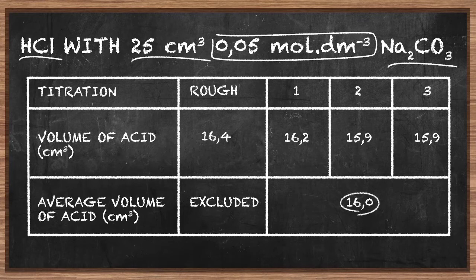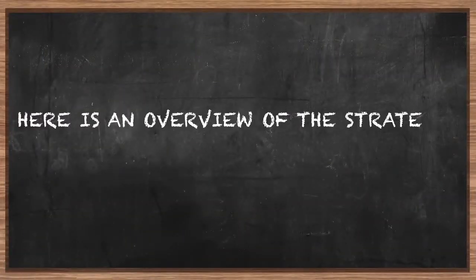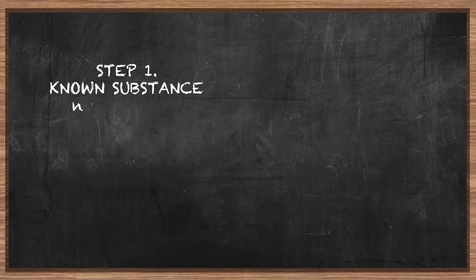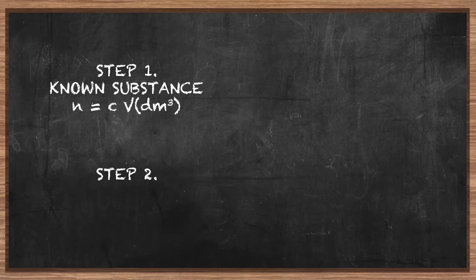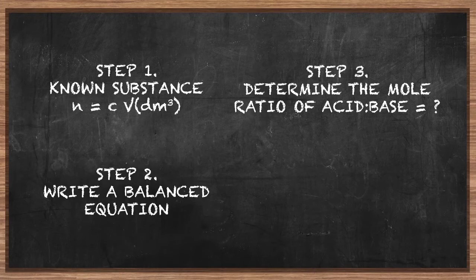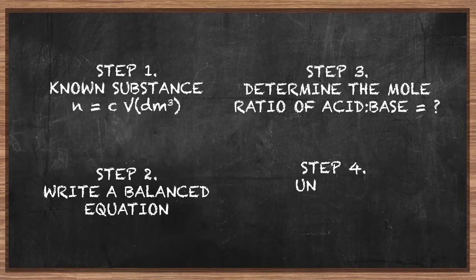Calculate the concentration of hydrochloric acid. Here is an overview of the strategy to apply when solving these types of problems. Step 1: calculate the number of moles of the substance with known concentration. Step 2: write a balanced equation for the reaction. Step 3: use the mole ratio of acid to base in the balanced equation to determine the number of moles that reacted. Step 4: calculate the concentration of the unknown substance using the formula — number of moles divided by volume in decimetres cubed.